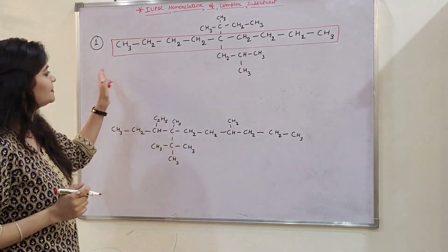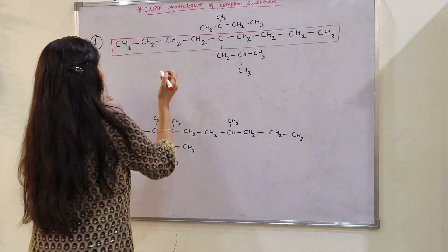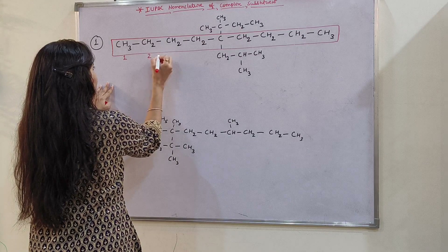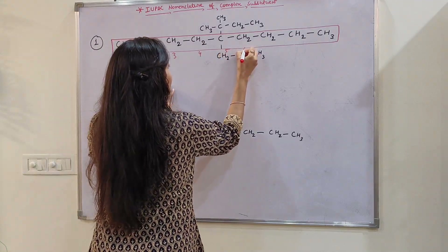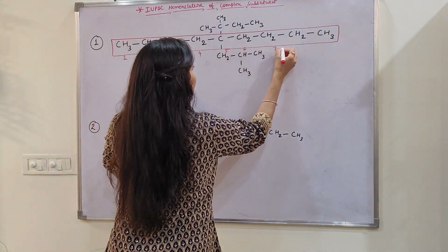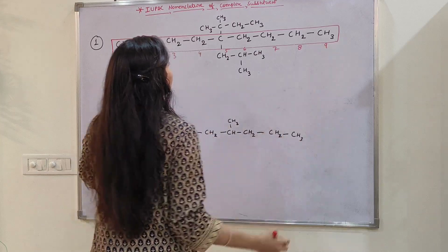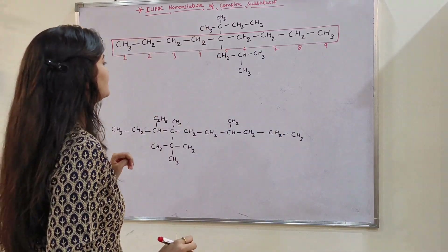So in this situation, we can do counting here. Let's count: 1, 2, 3, 4, 5, 6, 7, 8, 9. Now we have to write the name.